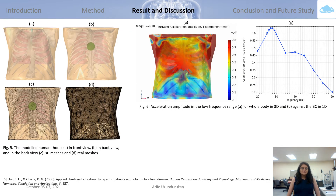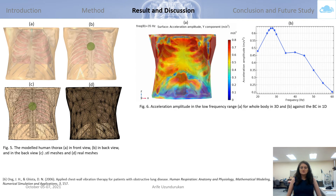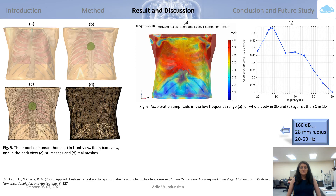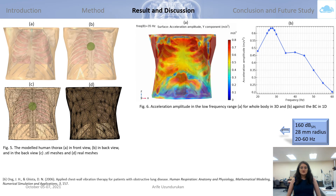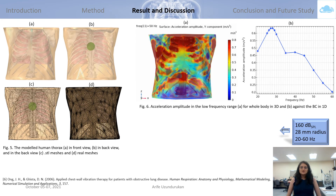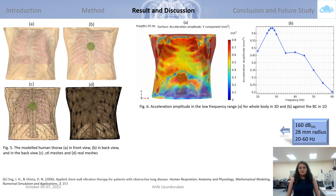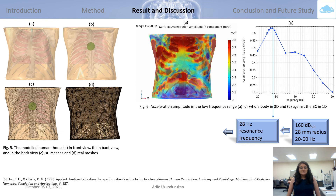The modeled human thorax consists of soft tissue, ribcage, lungs, and airways, as shown in Figure 5. In order to simulate the electro-acoustic device, a 160 dB sound pressure level is applied on a 28 mm radius back chest surface area, as shown in Figure 5D, under the frequency range of 20–60 Hz, and the resonance frequency is investigated at 28 Hz, as shown in Figure 6, for the whole body in three dimensions and against boundary conditions in one dimension.